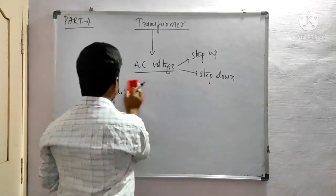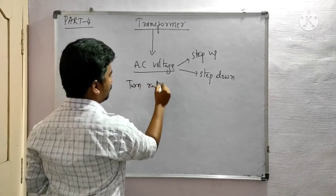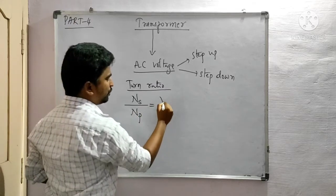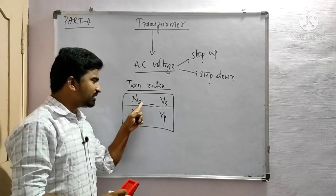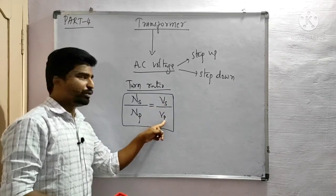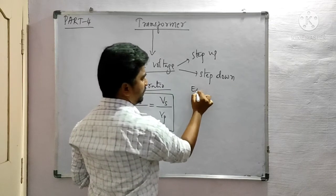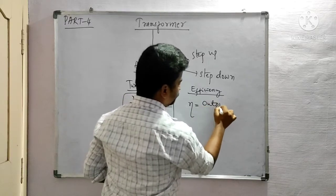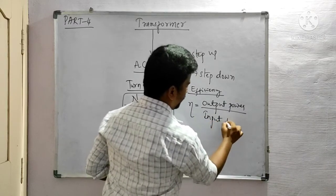A very important concept in the transformer is the turn ratio. Turn ratio is defined as the number of turns in the secondary to the number of turns in the primary, which equals the voltage across the secondary to the voltage across the primary. Efficiency is defined as output power divided by input power.